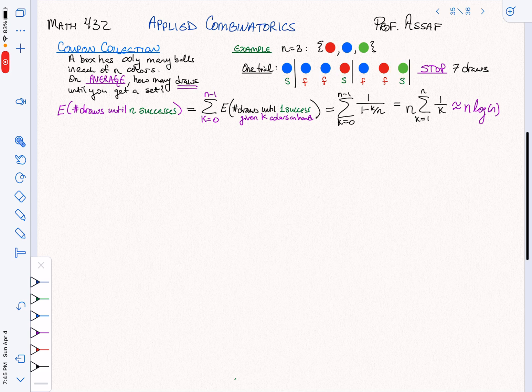We can divide this up into a success event, which is where we get a new color. I know what the expectation is—how many draws I expect it to take. If I already have k colors, here I've already got two colors.